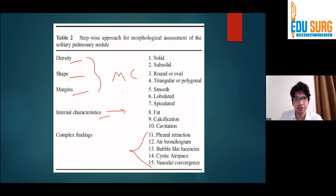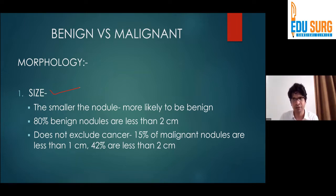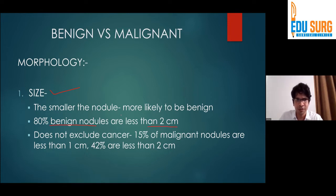Starting off with the morphological characteristics, we come to size. Size is the most important determinant in trying to differentiate a benign from a malignant lesion. We are going through this entire effort of characterizing this lesion because we want to be more sure in differentiating malignancy from benign disease. 80% of benign nodules are less than two centimeters — the smaller the nodule, the more likelihood of it being benign.